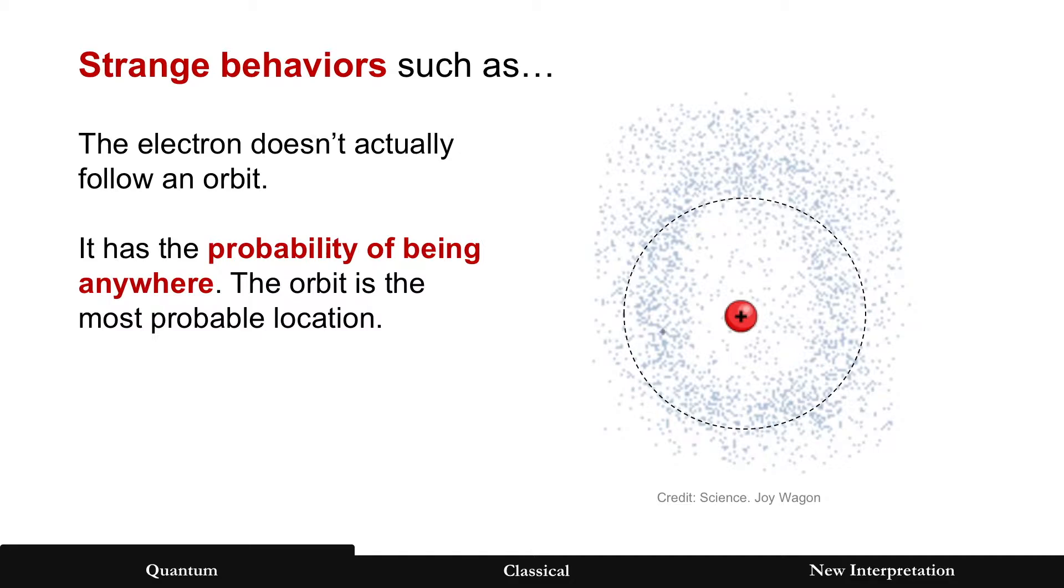But that orbital path is not really actually an orbital. That electron has the probability of being anywhere. See a little blue dot? There's electron, there's electron, there's electron. The orbital is really just the most probable location.